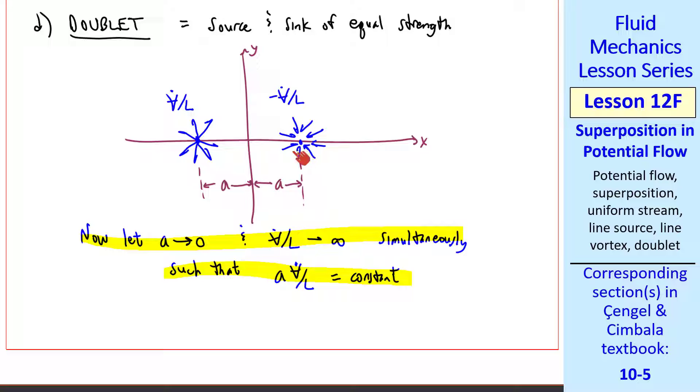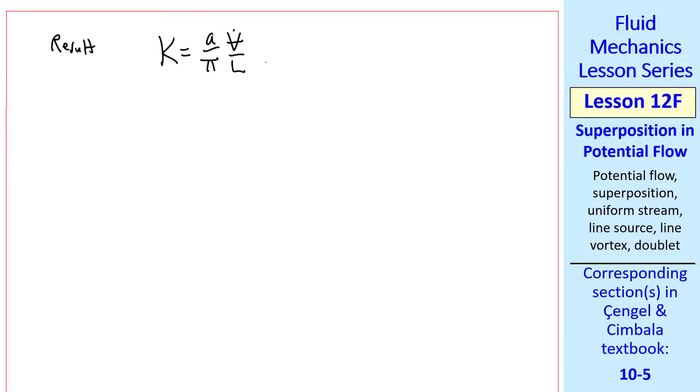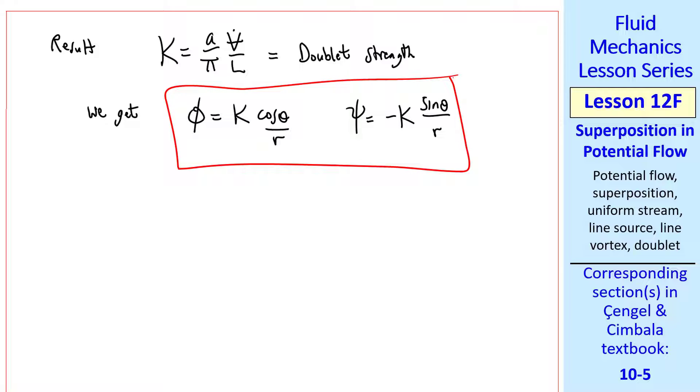Hopefully you can imagine this in your mind. We bring this source and sink together towards the origin, while at the same time making them stronger. And in the limit, the source is at zero minus, and the sink is at zero plus, some infinitesimal distance apart. If they were exactly at zero, they would just cancel each other out. I'm not going to do all the algebra. You can look at our textbook where I derive all this. We define capital K as a over pi, v dot over l, which we call the doublet strength. The doublet itself is an example of superposition, since we're superposing a source and a sink. We get some relatively simple equations after all the algebra, namely, phi equal k, cosine theta over r, and psi equal minus k, sine theta over r. This is our doublet.